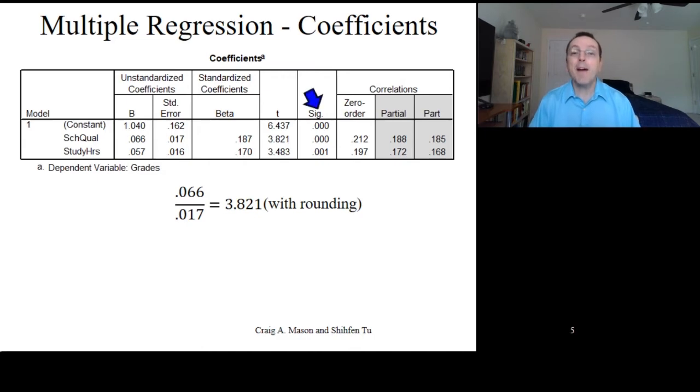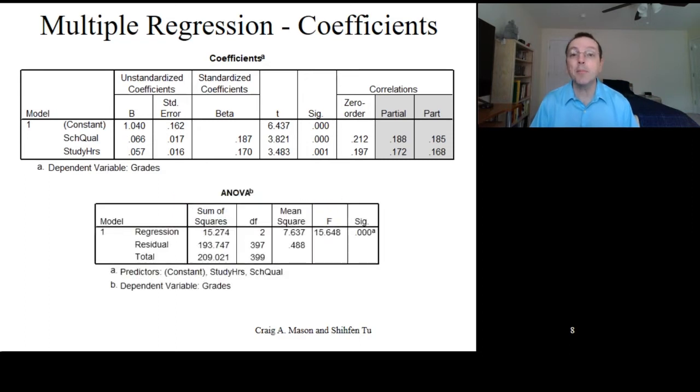Now, finally, we have the p-value for each of the regression coefficients. Note that the coefficients table does not include the degrees of freedom for the t-tests of the regression coefficients. I don't know why, but fortunately it's the same value as the residual degrees of freedom in the ANOVA table, which is 397 for this example.